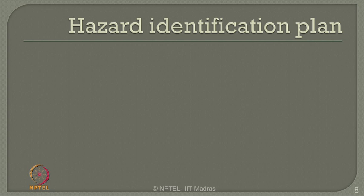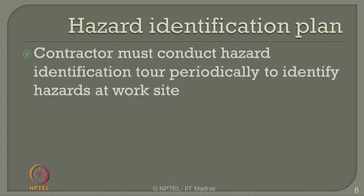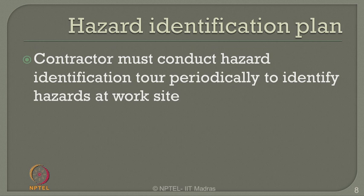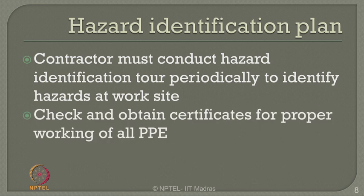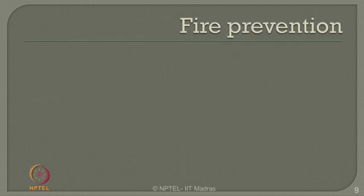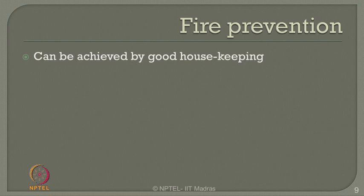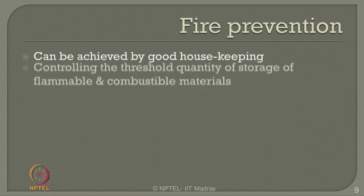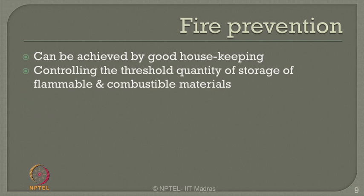Every industry should have a hazard identification plan. Contractors must conduct hazard identification tours periodically to identify hazards at the work site. Check and obtain certificates for the proper working condition of all personal protection equipment. Regarding fire prevention, this can be achieved successfully by good housekeeping. Controlling the threshold quantity of storage of flammable and combustible materials is one important step you can take yourself to achieve effective fire prevention.